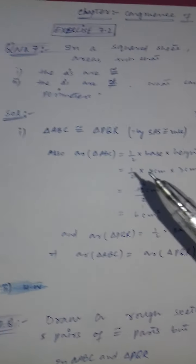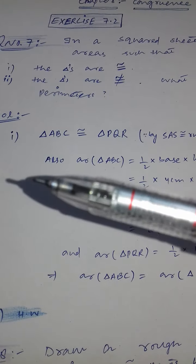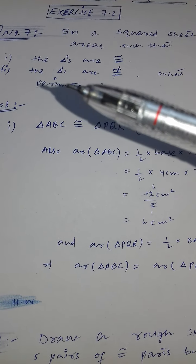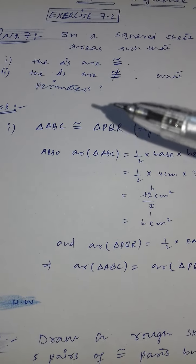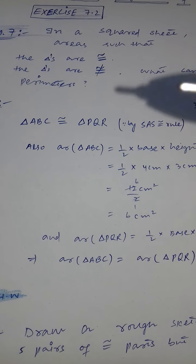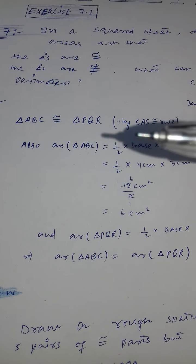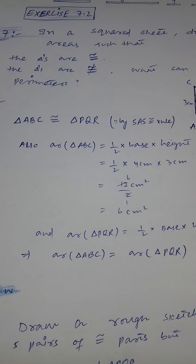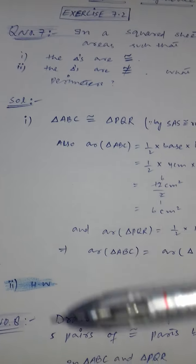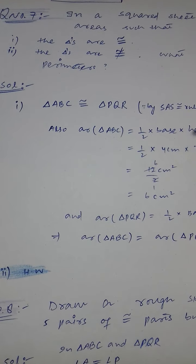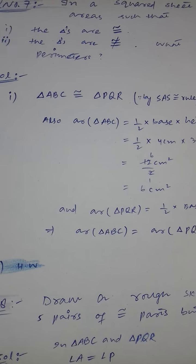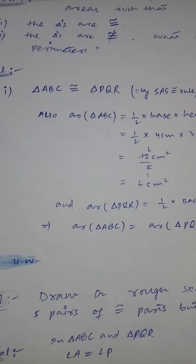For part two, you have to draw two triangles that are not congruent but have the same area. This is homework. Try it yourself first; if you can't get any idea, then I will help you.